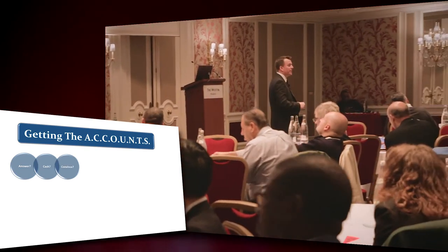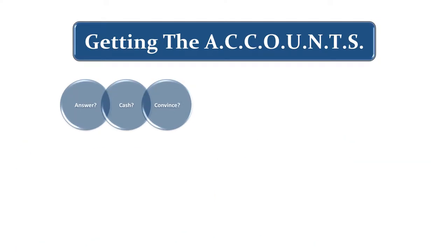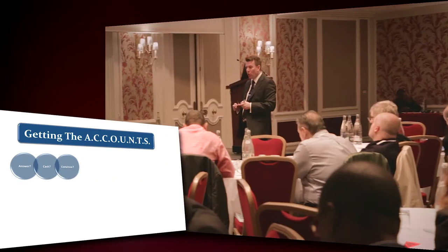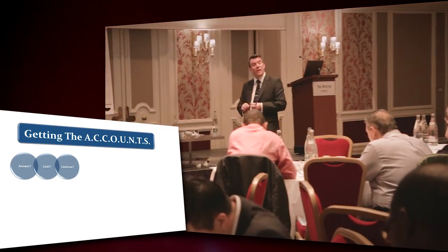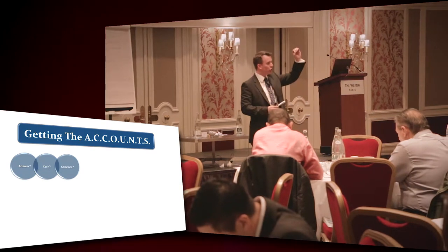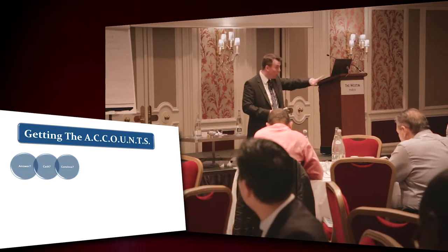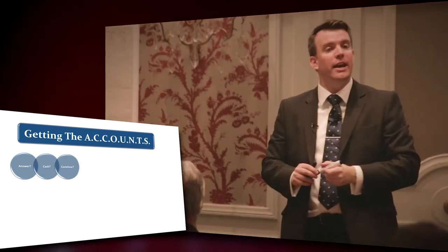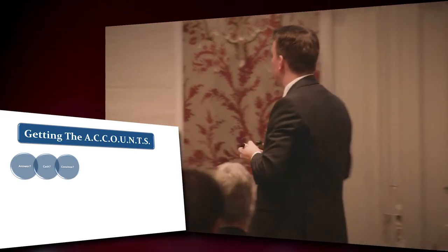The second C is Convince, which means beyond who we talk to and who we know at that business, is there anybody else that we have to convince before a decision can be made in our favor? If there is someone else that we do need to convince, score it a zero. If there is nobody else and we have the decision maker, score it a 10.